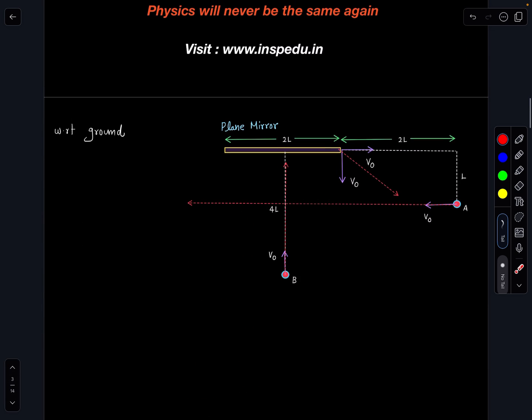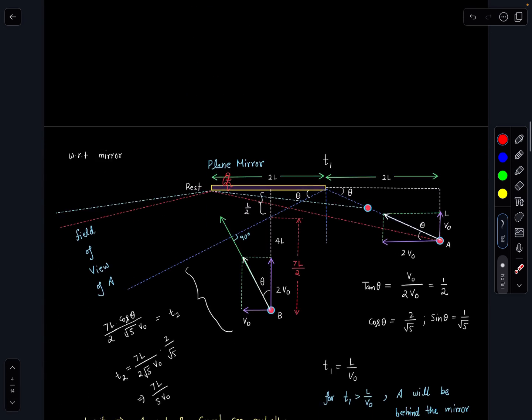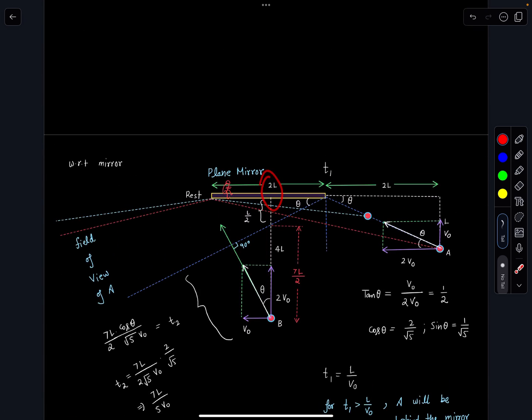Let's come back to this problem. Here the plane mirror is given and if we observe with respect to ground, the situation looks very complicated because the mirror and the two persons are moving. Dealing with this will be challenging, so what I will do is observe the situation with respect to the mirror itself. When you observe with respect to the mirror, this observer is having 2V₀ in this direction and V₀ in this direction.